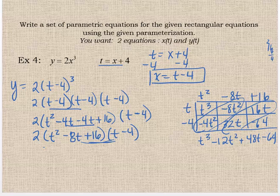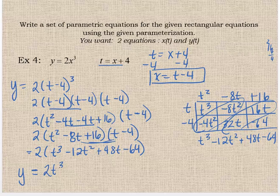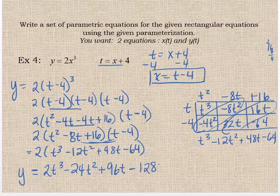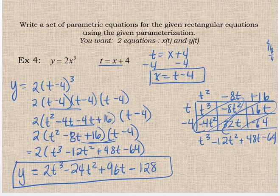Now I have to come back over here and distribute. Now I distribute the two. Don't wimp out. Stay with me. So it's going to be two t cubed minus 24t squared. 48 times two is 96. 96t. Two times 64, negative 128. This is your y equation. And there was your x equation. You have your two equations in terms of t. So then you have parametric equations. Hope that makes some sense. And we'll see you in class.